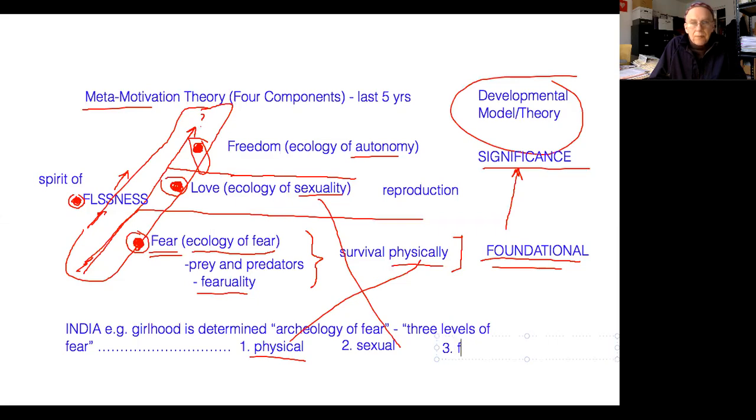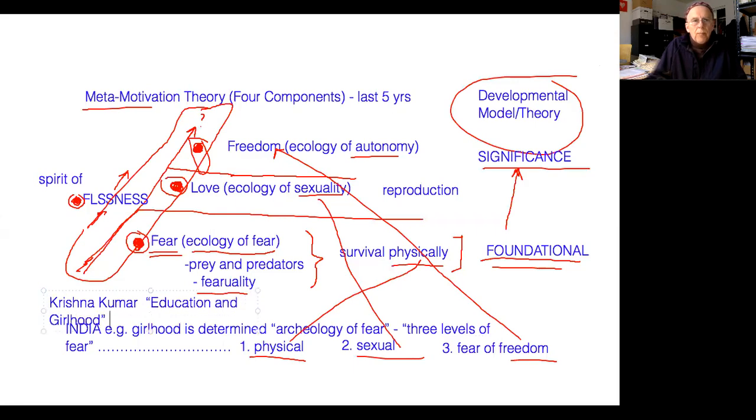And the third fear. This is coming from Kumar's study. Next one, she calls sexual fear. That is a problem within the second motivational level on my theory of the love or the ecology of sexuality. And then her third one, you guessed it, is fear of freedom. It's the third archaeology layer, archaeology of fear layer that Kumar identifies. And indeed, I thought that was pretty interesting to see freedom. Right there, the ecology of autonomy and how free a girl can or cannot exist within the Indian society. This is even contemporary, of course, goes back into ancient times. So that was a pretty nice study for me too. Her name is Krishna Kumar, and it's just called Education and Girlhood.